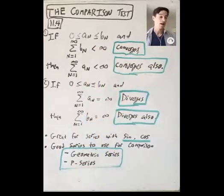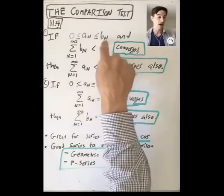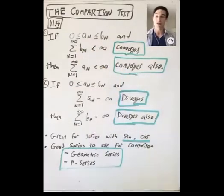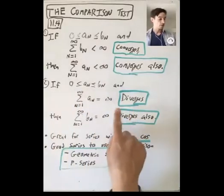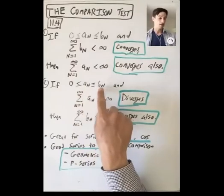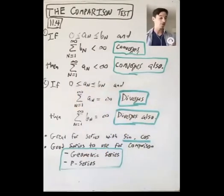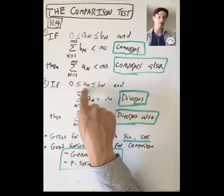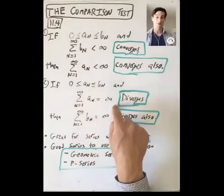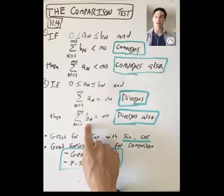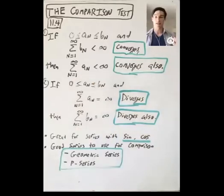That makes sense — you're adding up a bunch of numbers. If you add up the bigger numbers and get something less than infinity, then when you add up the smaller numbers you should also get something less than infinity. Similarly, if you have sequences a_n and b_n where a_n's are smaller than the b_n's and both are non-negative, and the sum of the a_n's goes off to infinity, then when you add up the bigger numbers that sum goes off to infinity as well.